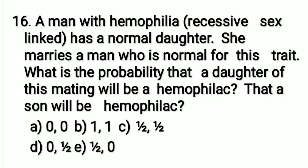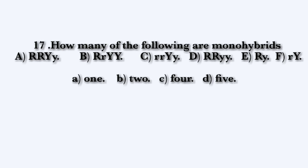A man with haemophilia has a normal daughter. She marries a normal man. What is the probability that a daughter of this mating will be haemophilic, and that a son will be haemophilic? There is no possibility of the daughter being haemophilic, because a carrier woman marries a normal man, so 0%. Among the two possible genotypes of males, one is normal and one is affected — that is 50%. The right option is option D.